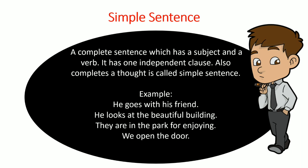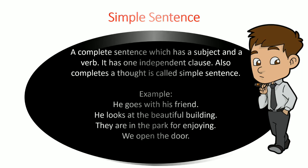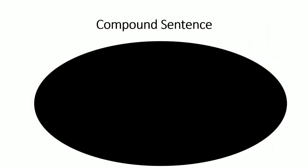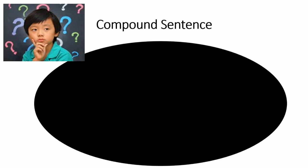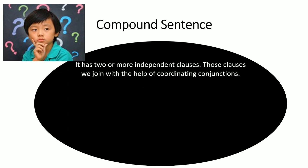Now let's look at another type of sentence structure called a compound sentence. Just like compound interest in accountancy, where interest gets compounded or increases, in compound sentences we join clauses with the help of some conjunctions. A compound sentence has two or more independent clauses. In simple sentences we had one independent clause; in compound sentences we mostly have two or more, and we join these clauses with coordinating conjunctions.